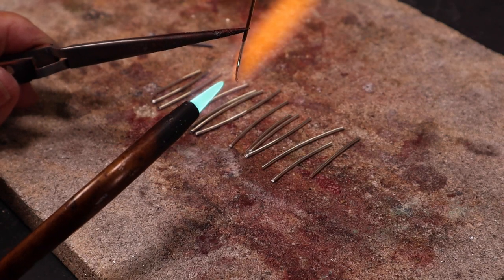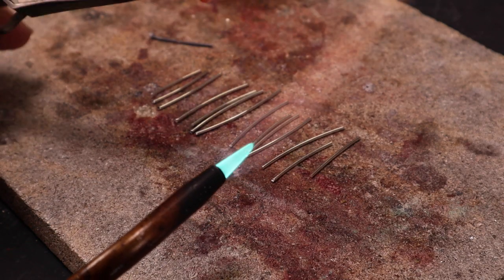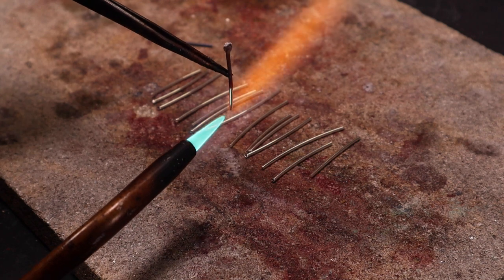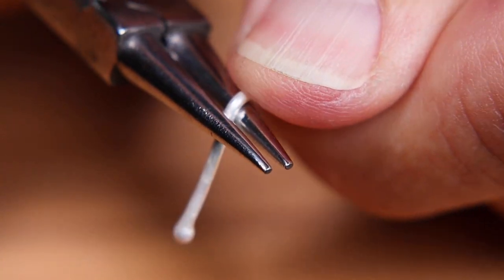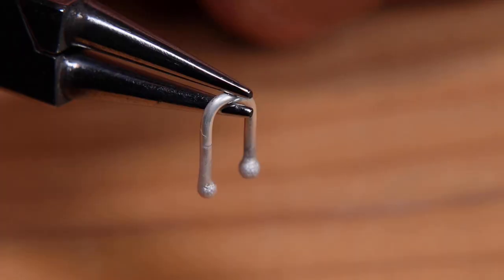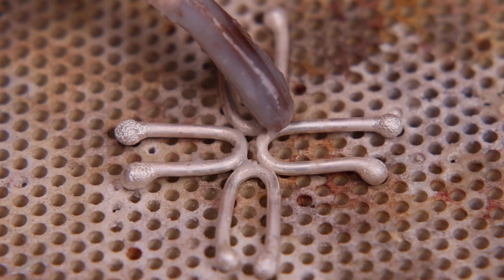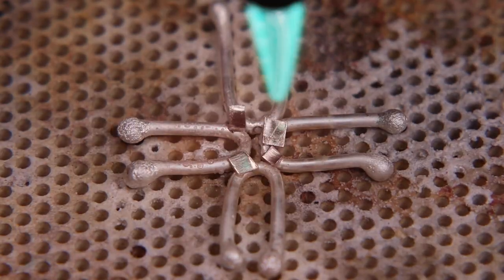First you want to ball some sterling silver wires. Then get them bent into a U-shape ready for soldering. Solder four of them together with hard solder.